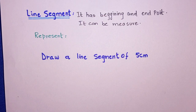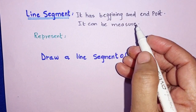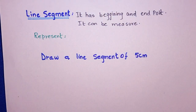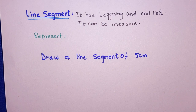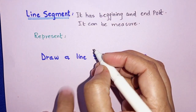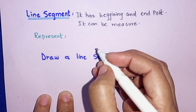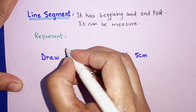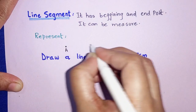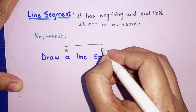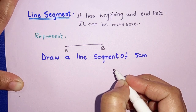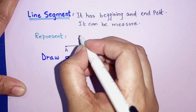Let's move to another concept — it is called 'line segment'. A line segment has a beginning point and an end point. The biggest difference between a line and a line segment is that a line segment has both an endpoint and a beginning point, whereas a line has neither. A line segment goes from one point to another — for example, it starts at point A and ends at point B.